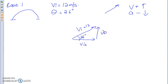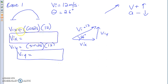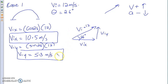Using SOH-CAH-TOA, we figure out the vi,x and vi,y components. Vi,x is going to use cosine: cos(26°) × 12, and vi,y uses sine: sin(26°) × 12. So vi,x = 10.5 m/s and vi,y = 5.3 m/s. Figuring out the x and y components is the first step in solving any projectile motion question.